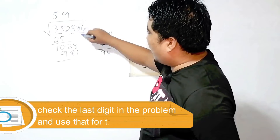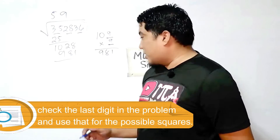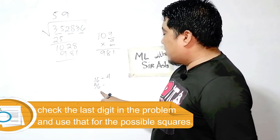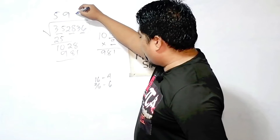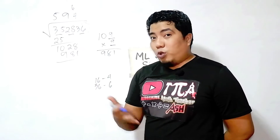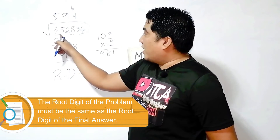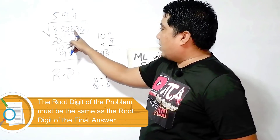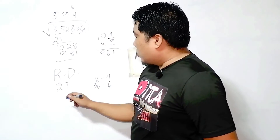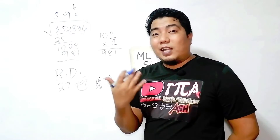For our last digit, the last digit of the number is 6. What are the perfect squares from 1 to 100 that end with 6? That is 16 and 36. The square root of 16 is 4; the square root of 36 is 6. So our answer could be 594 or 596. To find the root digit: 3 plus 5 is 8, plus 2 is 10, plus 8 is 18, plus 3 is 21, plus 6 is 27. Then 2 plus 7 is 9. Our root digit is 9.